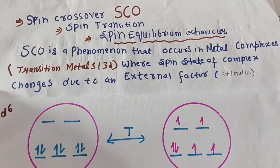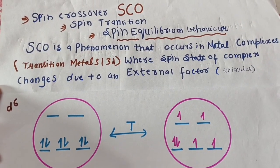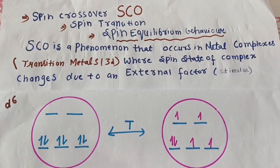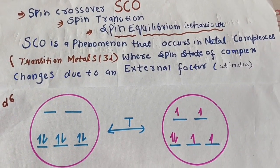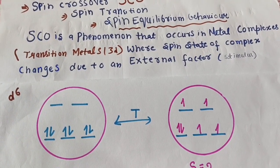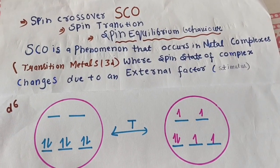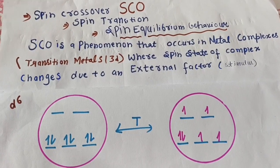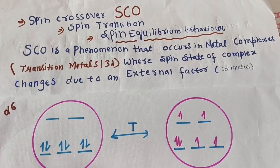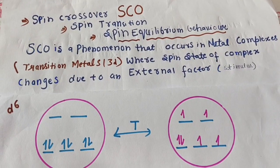Spin crossover is also known as spin transition or spin equilibrium behavior, because in this the spin changes from one spin state to another, or comes to an equilibrium state. Spin crossover is a phenomenon that occurs in metal complexes where the spin state of a complex changes due to an external stimulus or external factors.